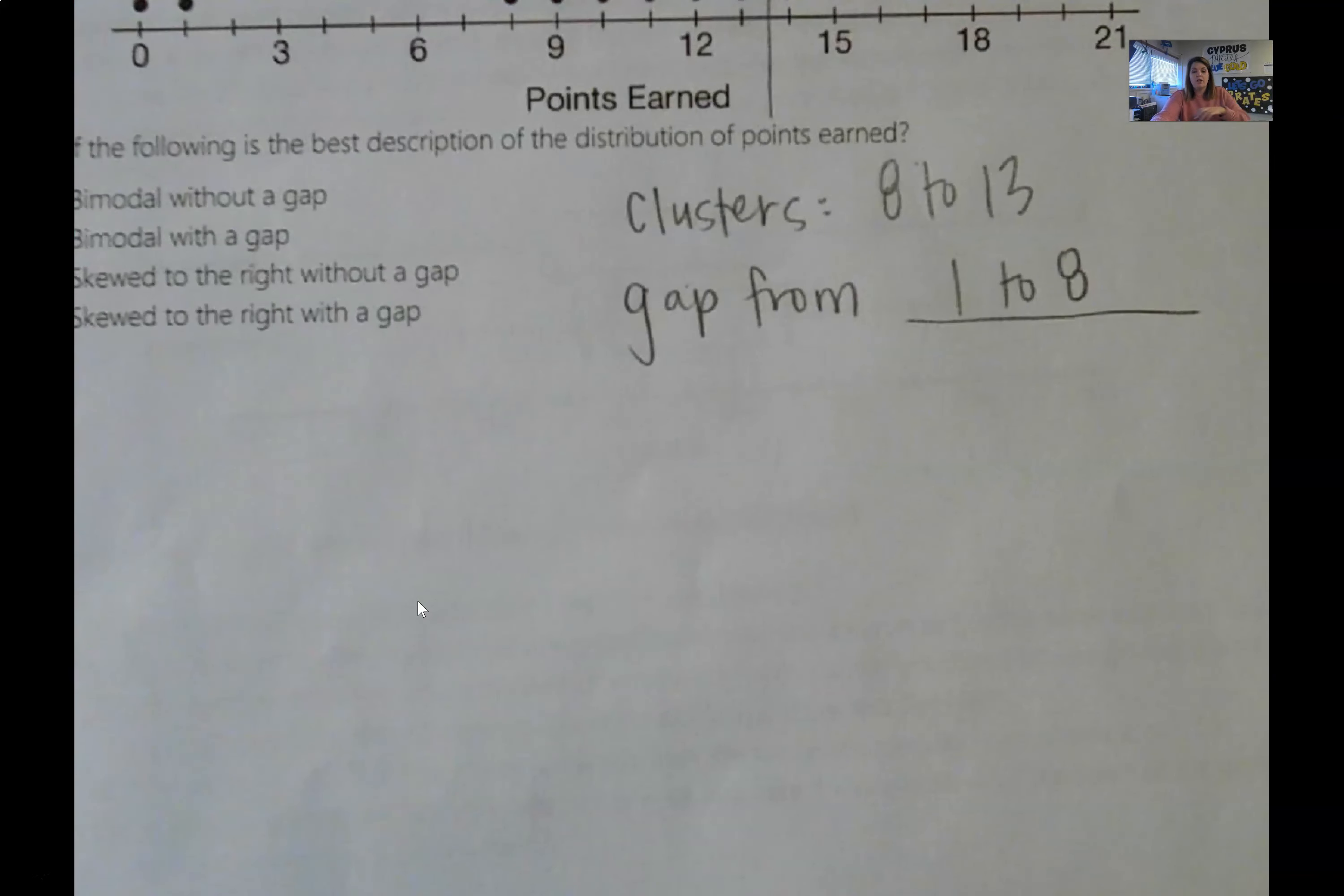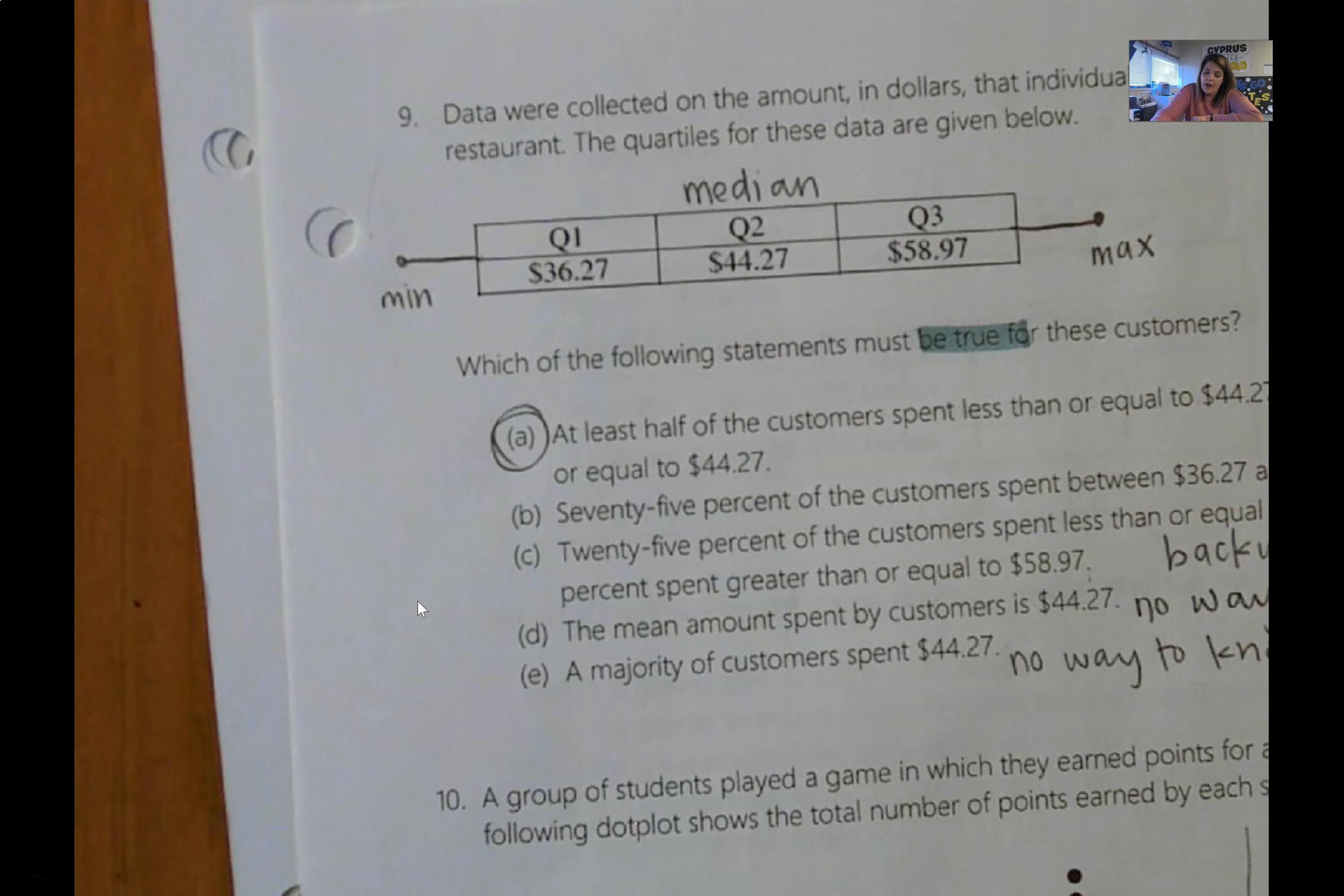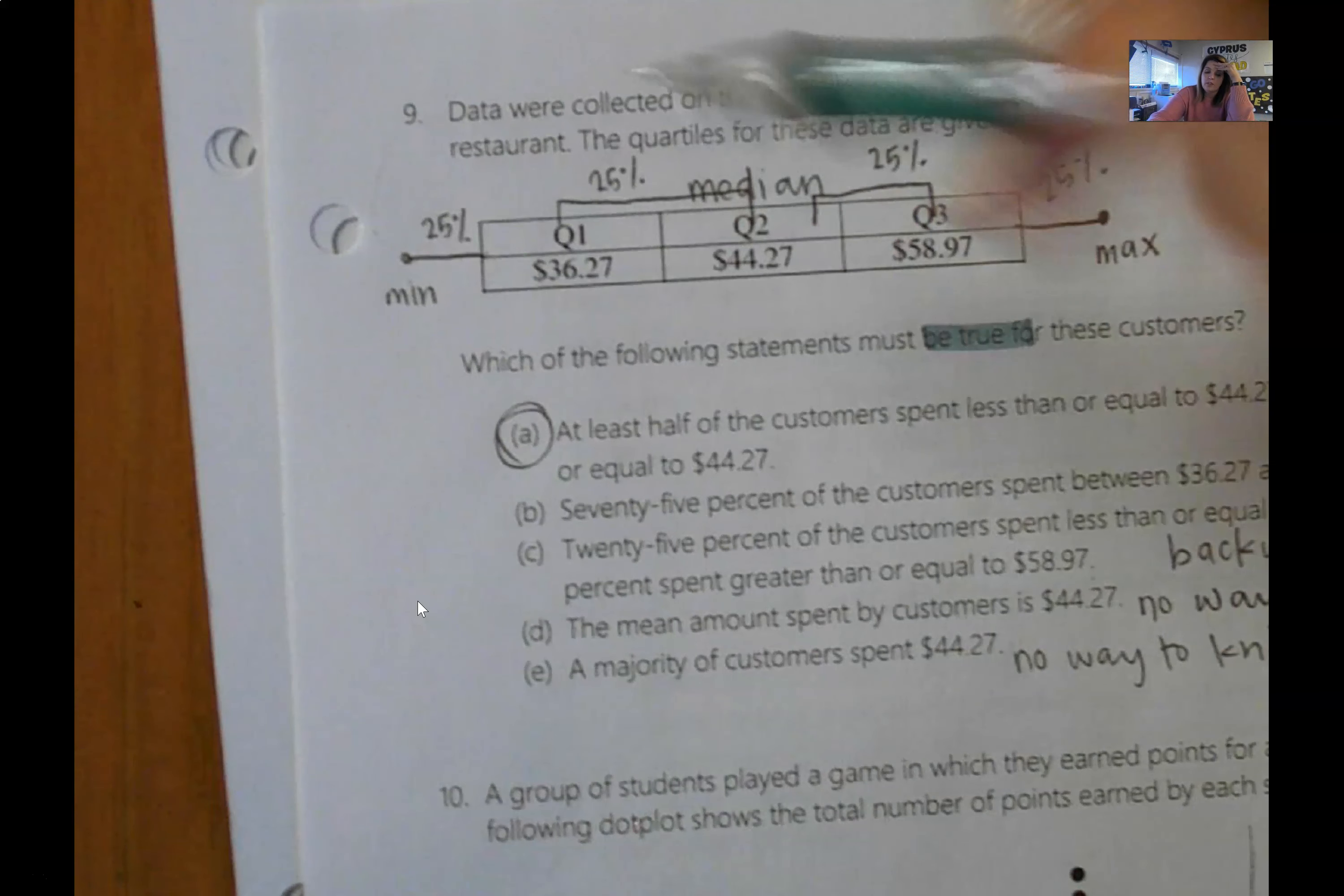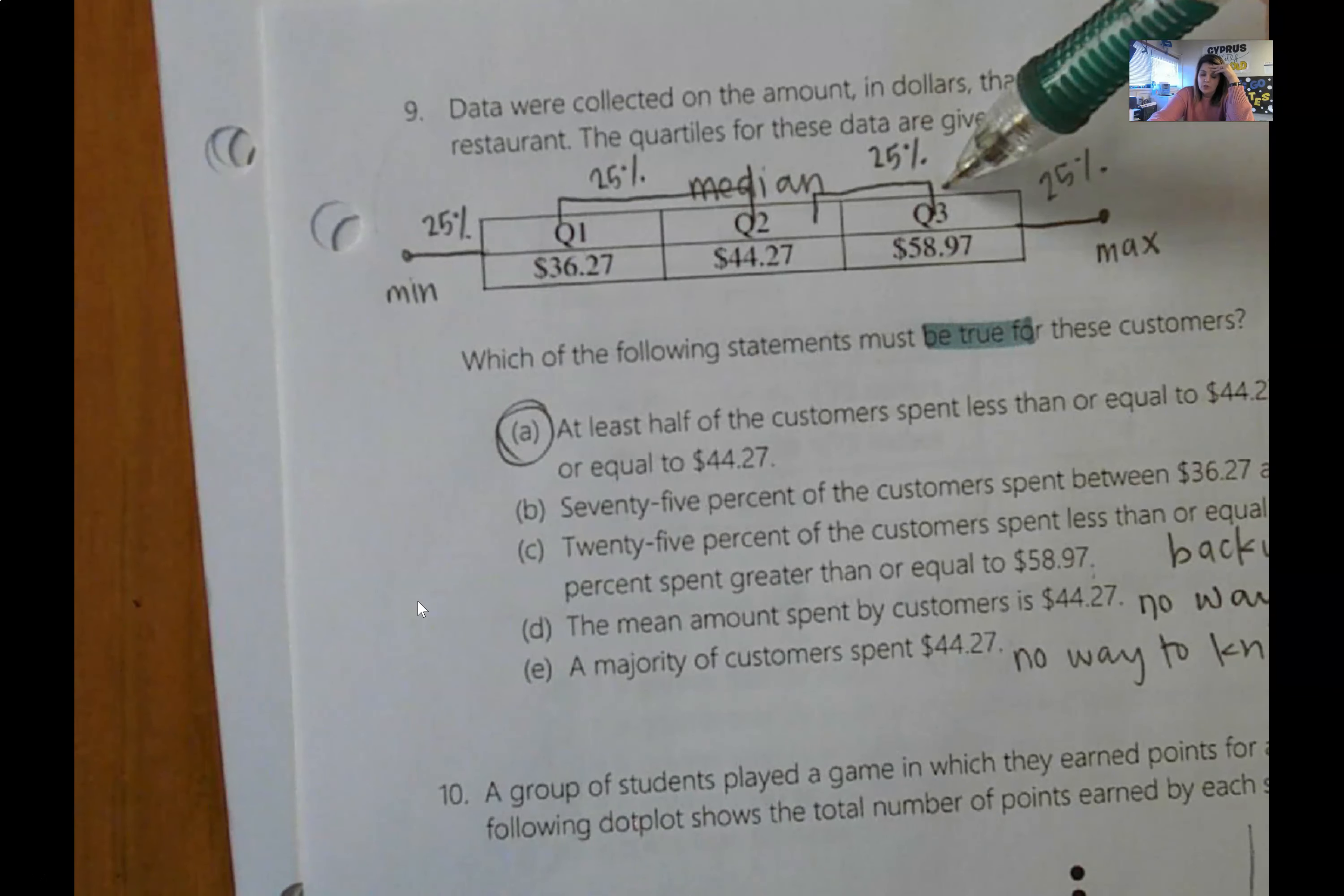Number nine, the trick on number nine is that you need to understand that quartiles break your data up into four sections. So a min would be out to the left and a max would be out to the right. And you have to be really careful on this one because this is 25% of your data, but then this is 25%, and this is 25%, and then this is 25%. So you have to be really careful that you don't get confused and think, okay, this is 25%, 25, 25. You have to realize between quartile one and the median is 25. Median to quartile three is 25. So the only one that works is A.